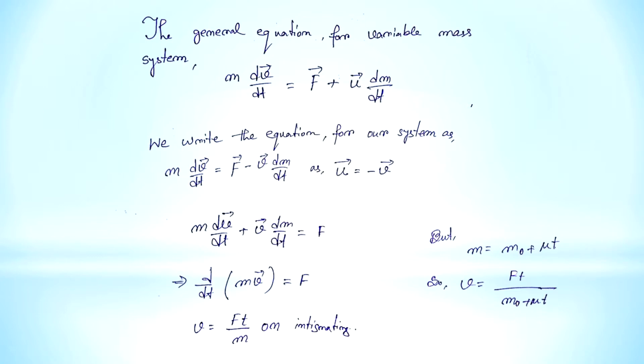As the rate of loading of mass is constant, that is μ, we can write m = m₀ + μt, where m₀ is the mass of the flat car. So we can write v = F/(m₀ + μt). Thus the acceleration is a = dv/dt.